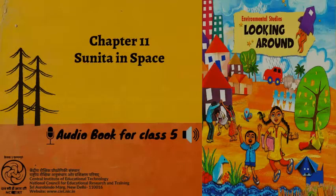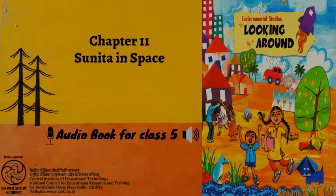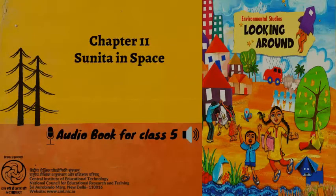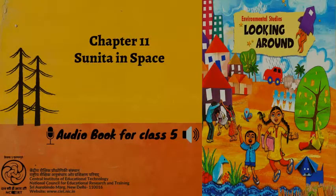Shahmeer: Yes I know. Sunita Williams went in a spaceship. I saw on TV that she could see the Earth from there. Uzaira: Yes, from there the Earth looked like this globe. Shahmeer: If our Earth looks like this globe, then where are we? Uzaira takes a pen and places it on the globe. Uzaira: Here we are. This is India. Shahmeer: If we were here like this, we would all fall off. I think we must be inside the globe.